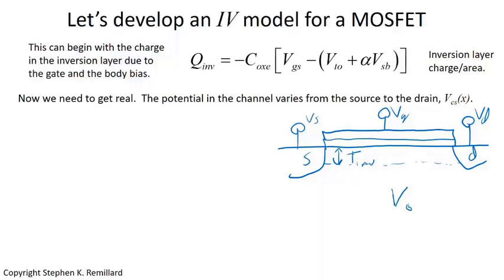Throughout the channel, the potential is varying. Previously we assumed the potential throughout the channel is the same as the source, which gave us this expression. Now we're going to relax that assumption and modify the expression to account for the position-dependent potential. There is now a potential difference between wherever you are in the channel and the source, called V_Cx — the channel-source voltage — which is position dependent, with x = 0 at the source and x = L at the drain.